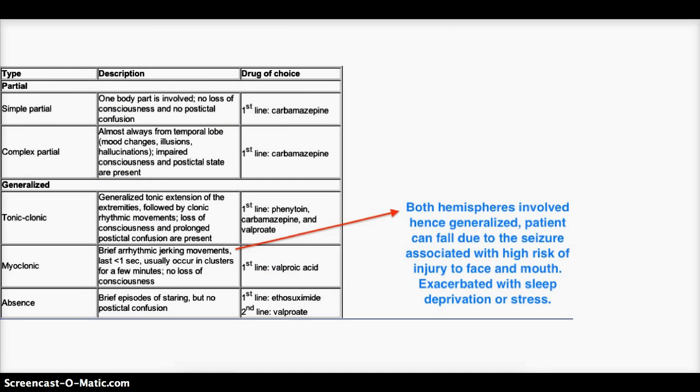Now let's quickly summarize each of the seizures we discussed so that we have a better understanding. The first one is under partial seizure, and this will be simple partial that we discussed, where there was no loss of consciousness. Only one part of the body was involved. There was no post-ictal confusion. Post-ictal confusion basically means right after seizure, there is no state where the person or patient is confused. So he gains consciousness and he is normally acting or behaving. The drug of choice for simple partial seizure is carbamazepine. This is the first line.